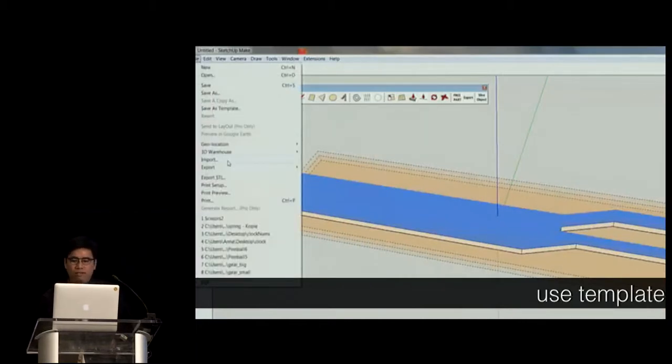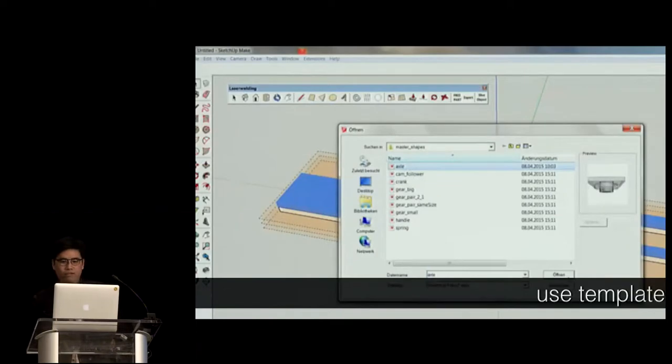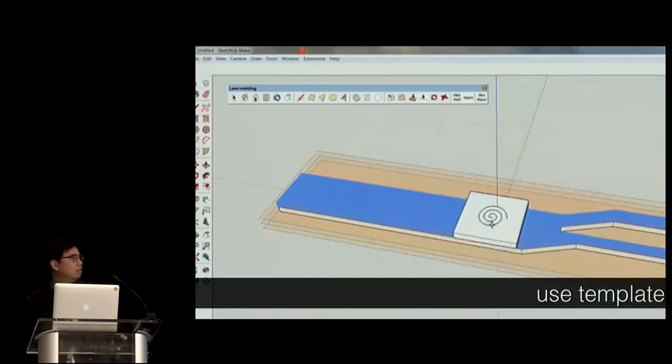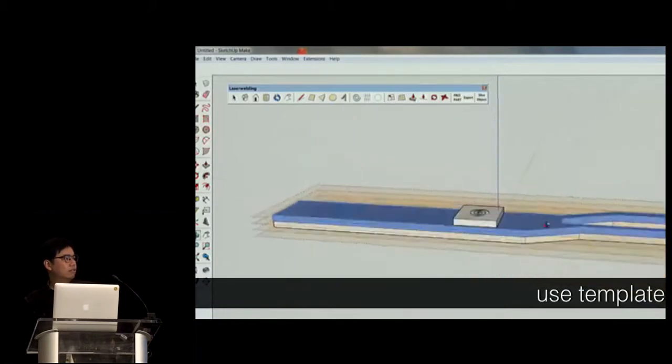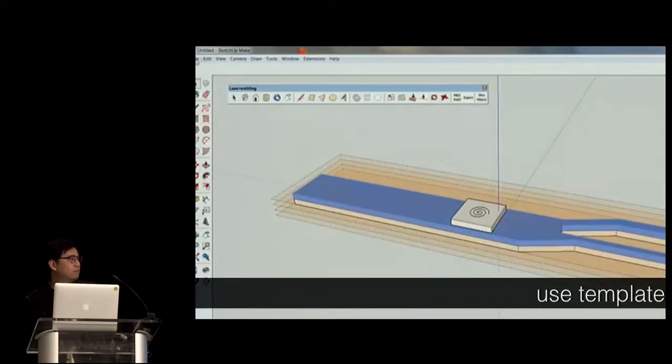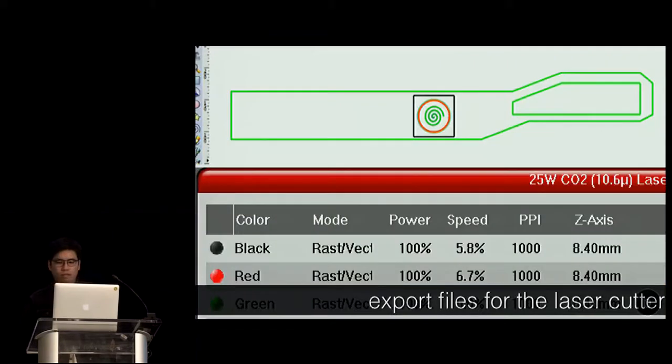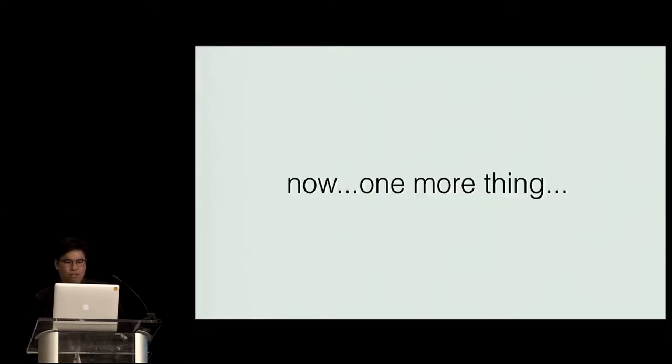Now, laser stacker also provides a template database where users can import functional component, such as an axle, scale it, and put that onto the scissor. So, after all the modeling process, laser stacker editor output two things. First, a SVG file and a laser power setting. So, oftentimes, laser cutter driver offers a mapping between power setting and the colors in the SVG files. That means our laser stacker can control the power setting of each cutting path by assigning them different colors. Okay. Now, one more thing.